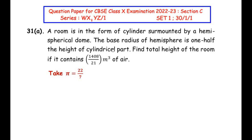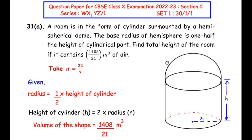Let us understand this question using a rough diagram. This is the cylindrical room with a hemispherical dome on top. The base radius of the hemisphere is the same as the base radius of the cylinder, considered as R. Since the base radius is one half the height of the cylindrical part, rearranging gives the height of the cylinder H as 2 times the radius R.